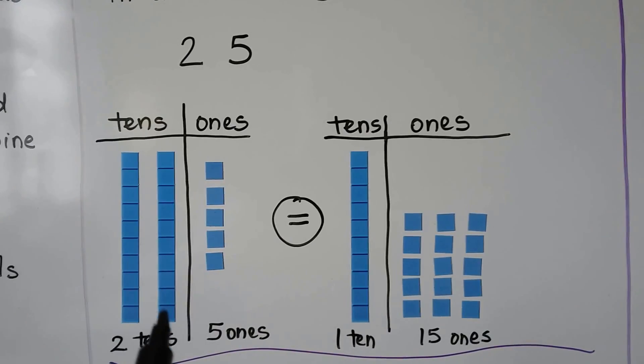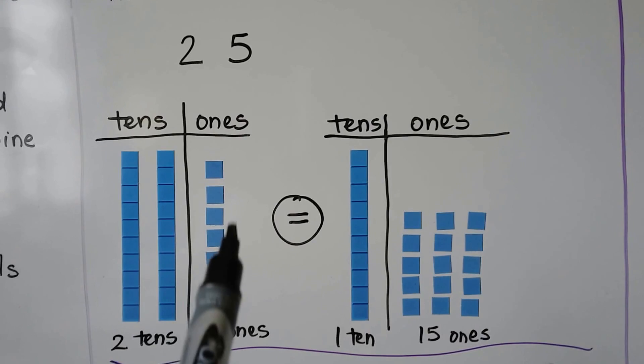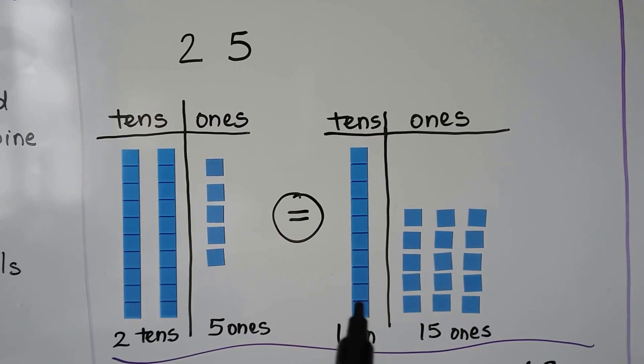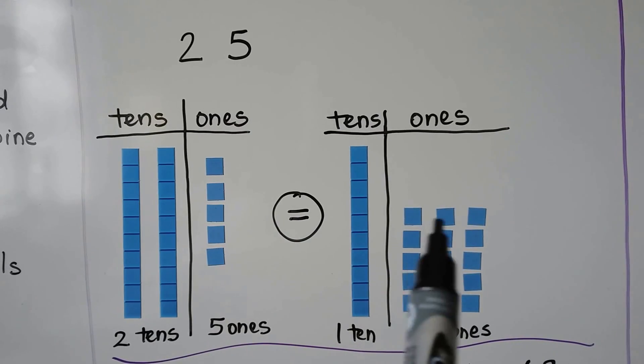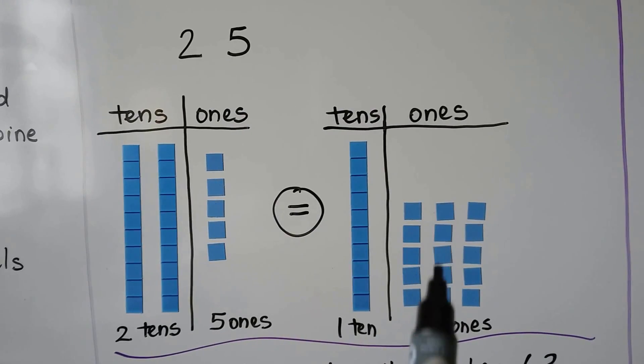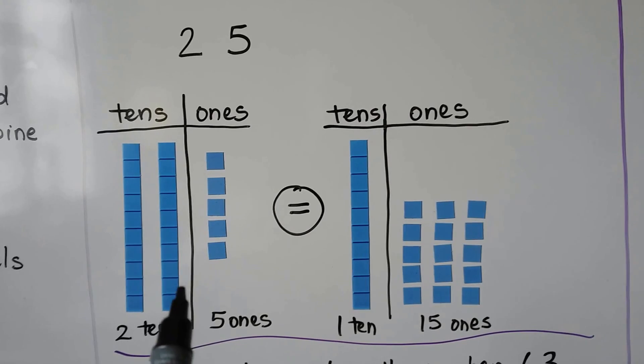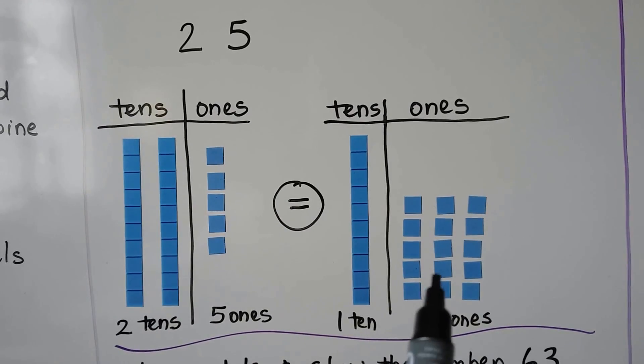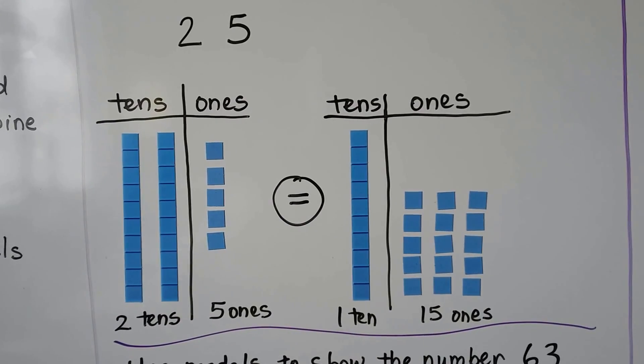We can also break one of these tens up and put it on the one side. So we have just one 10 and 15 ones. This 5 and this 5 makes a 10. We just broke one of those up into units. And now we have 15 ones instead of 5 ones.